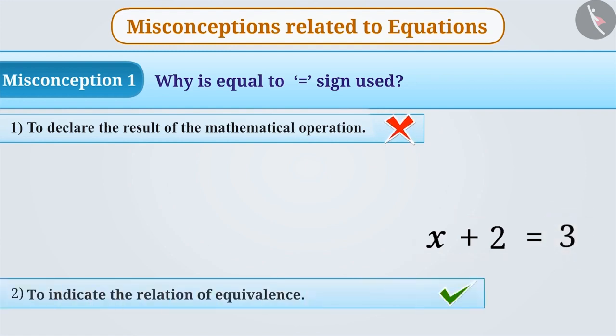The correct understanding is that the value of the addition of x and 2 written on the left-hand side of the sign of equality is equal to 3.